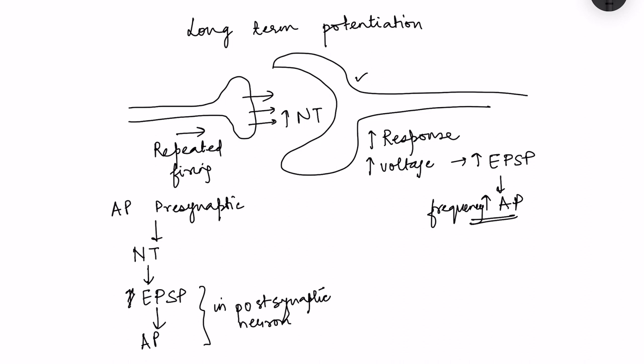When we talk about long-term potentiation, the keyword is repeated firing of the pre-synaptic neuron. Whenever there is repeated firing, each action potential is going to release more and more neurotransmitters. For long-term potentiation, the neurotransmitter involved is the excitatory neurotransmitter glutamate.